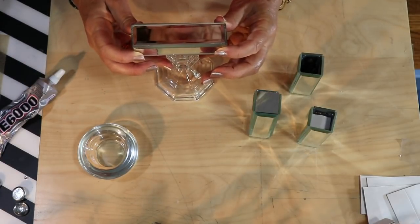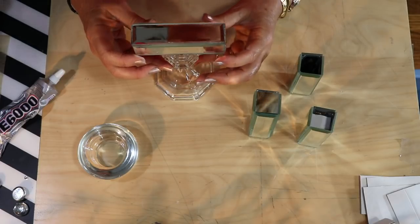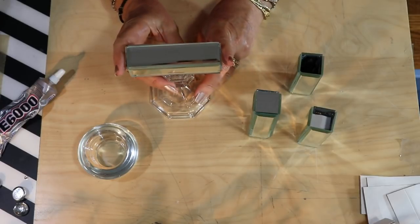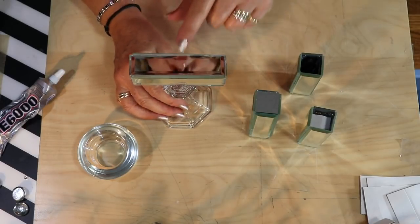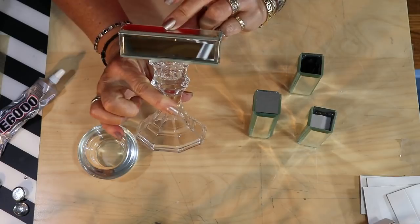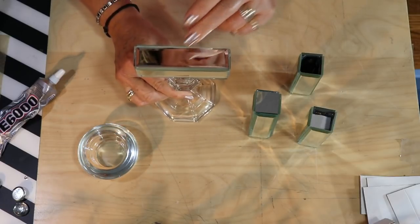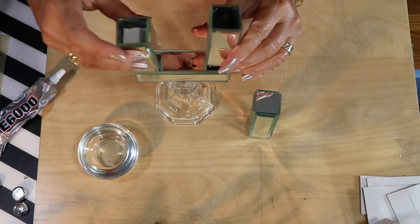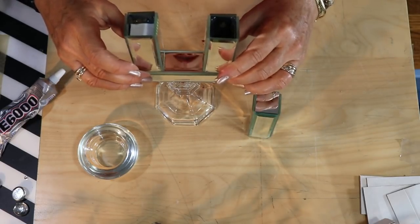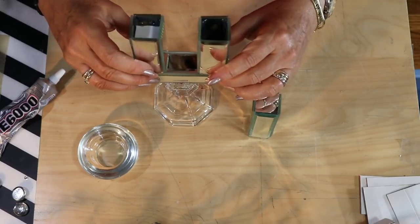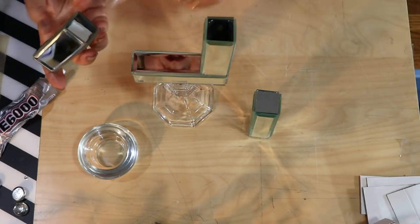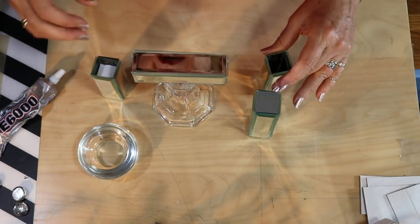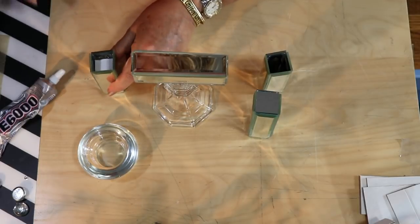Now that we have this piece attached like that, the next thing we're going to do is put our side columns on. Those are going to go right there, one on each side. With these I'm going to be putting the glue directly on to the base of here because I don't want to have glue showing.